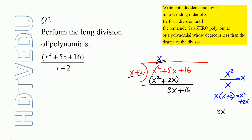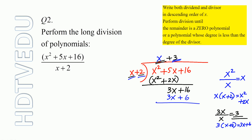What is the leading term now? 3x. What is the leading term of the divisor? x. What is 3x divided by x? 3. So plus 3. And what is 3 times x plus 2? 3x plus 6. So what is 3 times x? 3x. And what is 3 times 2? It is 6. So what is 3x minus 3x? 0. And what is 16 minus 6? It is 10. So x squared plus 5x plus 16 divided by x plus 2 is x plus 3, remainder 10.